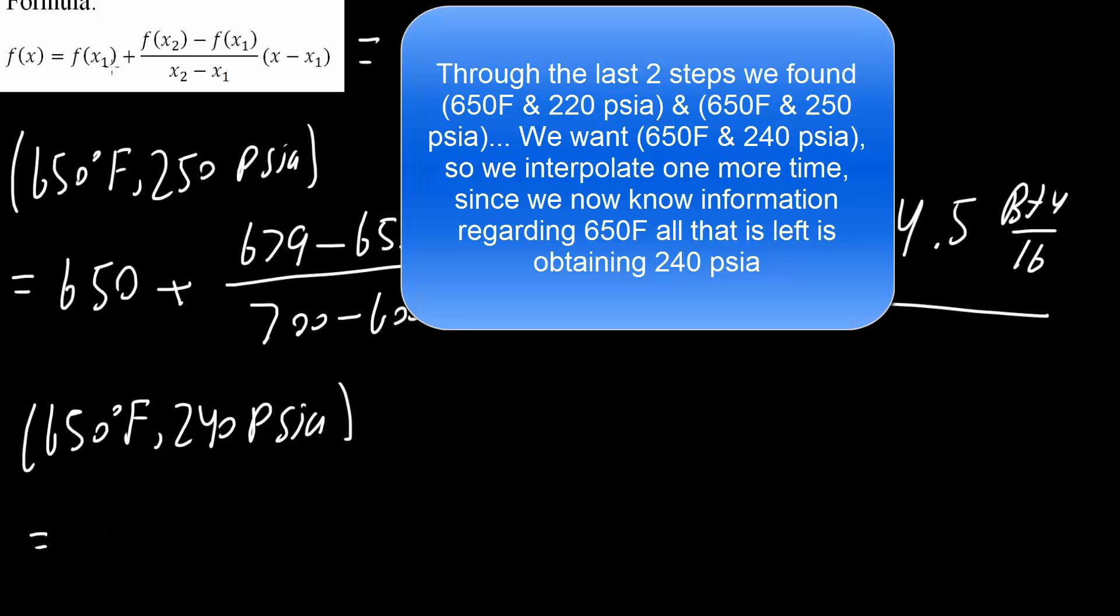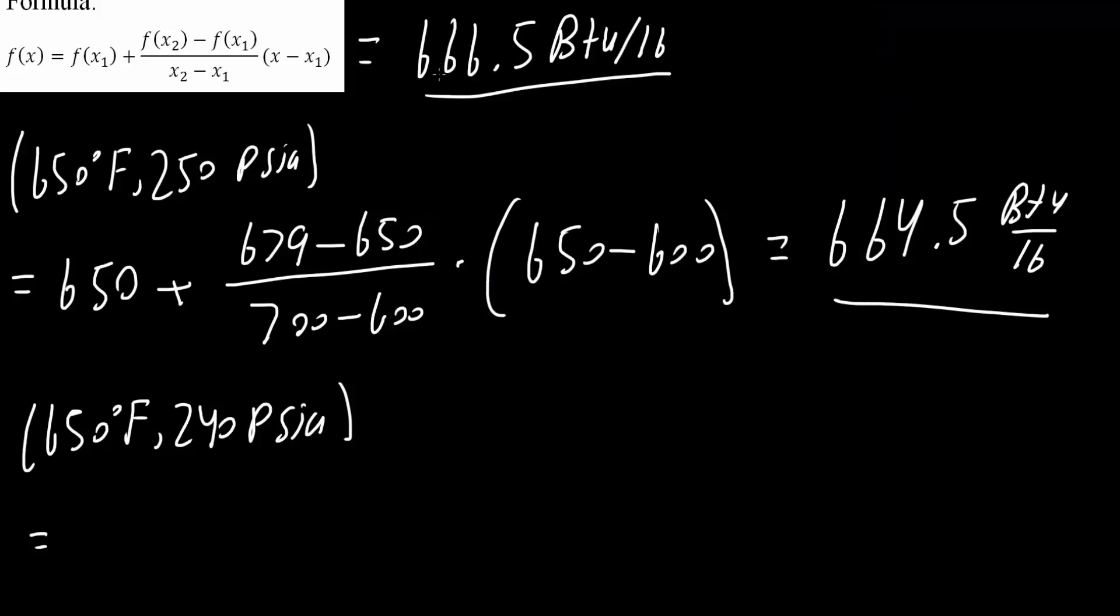So f(x₁) will correspond to 666.5 BTUs per pound. 666.5 plus f(x₂), which would be 664.5, minus f(x₁), which is 666.5, divided by 250 minus 220. x₂ is 250.